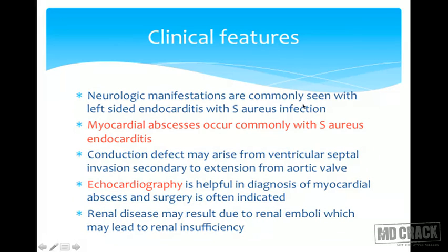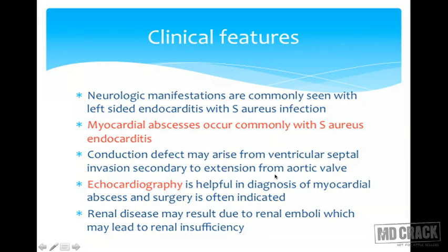Neurologic manifestations are commonly seen with left-sided endocarditis with Staphylococcus aureus infection. Myocardial abscesses occur commonly with Staphylococcus aureus endocarditis, given its high virulence. Conduction defects may arise from ventricular septal invasion secondary to extension from the aortic valve. Echocardiography is helpful in diagnosis of myocardial abscess and surgery is often indicated. Renal disease may result from renal emboli leading to renal insufficiency.